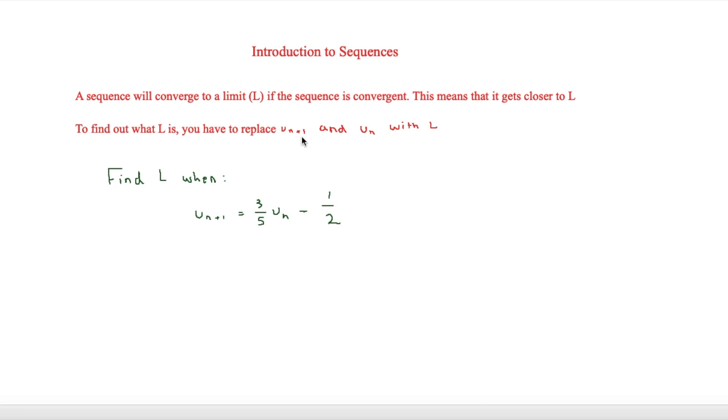And this question says find l, so find the limit, when un plus 1 is equal to 3 fifths un minus a half. So in order to do this, we're simply going to replace both un plus 1 with l and then the un with l. So therefore, we have l is equal to 3 fifths l minus a half.